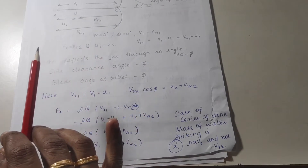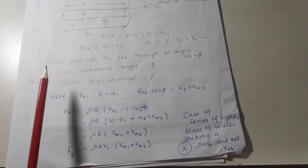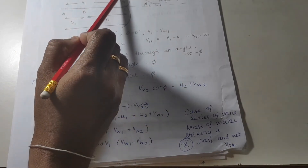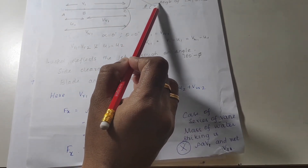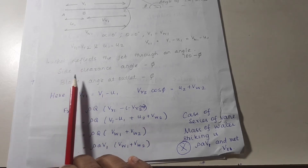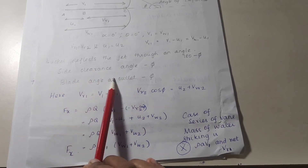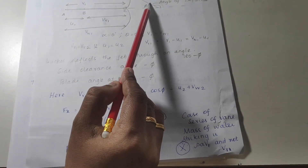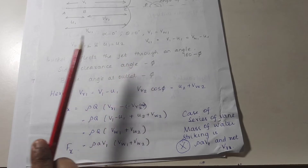In some problems, angles may be given in terms of phi or 180 minus phi. If a problem states 'bucket deflects the jet through an angle' — for example, 160 degrees — that means 180 minus phi equals 160, so you must find phi from that. However, if the problem mentions 'side clearance angle' or 'blade angle at the outlet,' then that value directly represents phi.